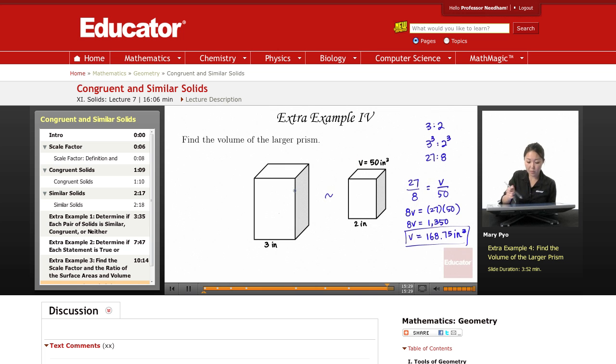But then their volumes have to equal 27 over 8. That's the ratio of their prisms. So you just make the two ratios equal to each other, set it equal.